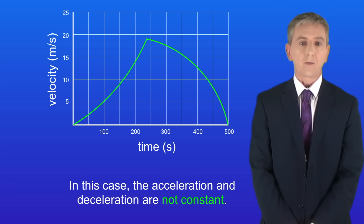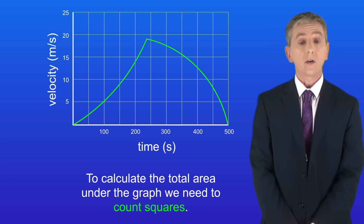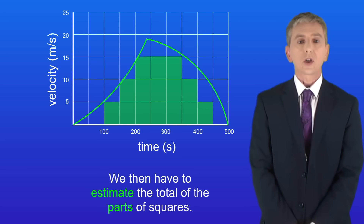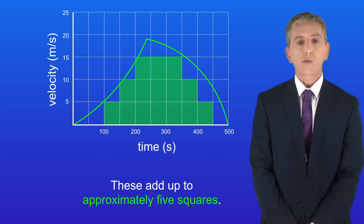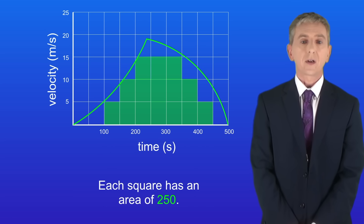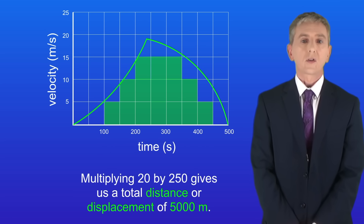You might see a velocity-time graph where the acceleration and deceleration are not constant. To calculate the total area under the graph we need to count squares. In this case there are 15 complete or almost complete squares, and the parts of squares add up to approximately 5 squares, giving a total of 20 squares. Each square has an area of 250, so multiplying 20 by 250 gives us a total distance or displacement of 5000 meters.